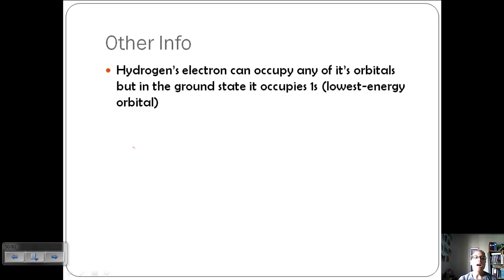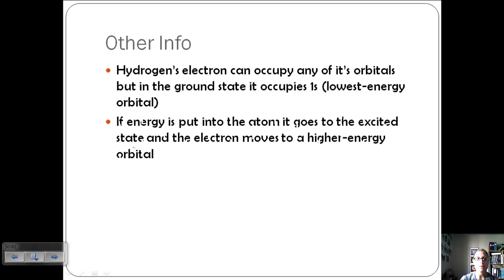Some other information. Hydrogen's electron can occupy any of its orbitals. But in the ground state, it will occupy the lowest energy orbital, which is always going to be 1s. But once it leaves ground state, it can occupy any of those other orbitals. If energy is put into the atom, then it's going to go to the excited state and move to some higher energy orbital.